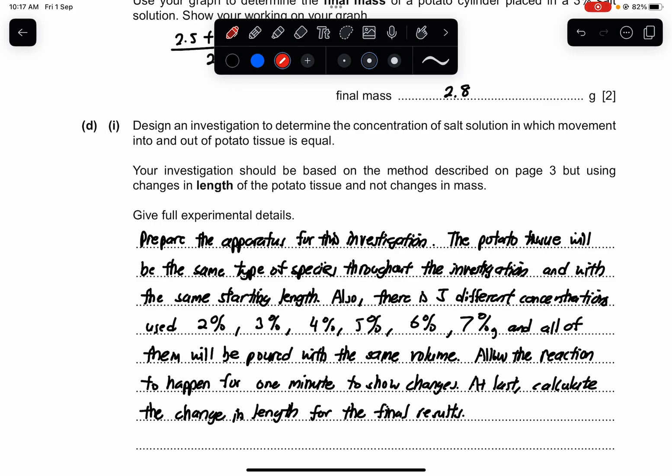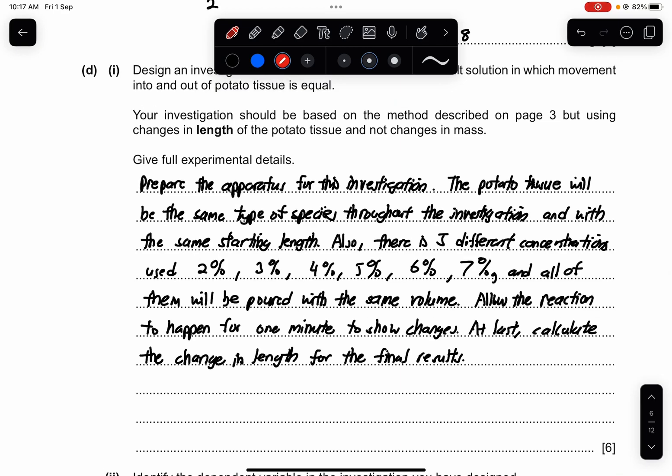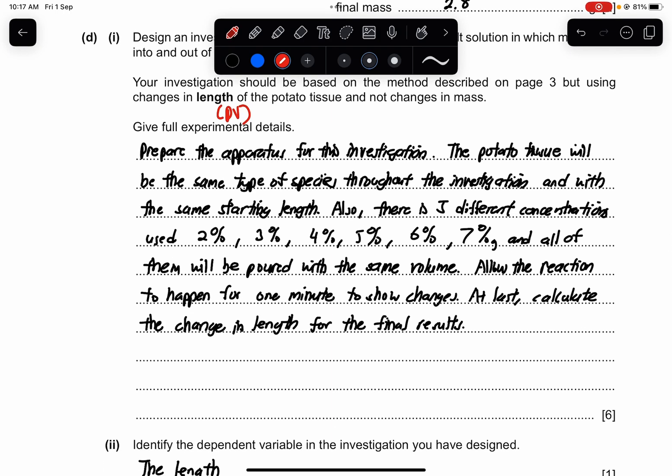Part D1. Design an investigation to determine the concentration of salt solution in which movement into and out of potato tissue is equal. Your investigation should be based on the method described on page 3, but using the changes in length of the potato tissue and not the change in mass. So this is technically the changes in length now. So this could be the DV. Prepare the apparatus for the investigation. The potato tissue will be the same type of species throughout the investigation and with the same starting length. Also, there is 5 different concentrations used. I'll just use 6 because it's better. So used with 2%, 3%, 4%, 5%, 6%, 7%. And all of them will be poured with the same volume. So allow the reaction to take happen for at least 1 minute to show changes. At last, calculate the change in length for the final results of this investigation.